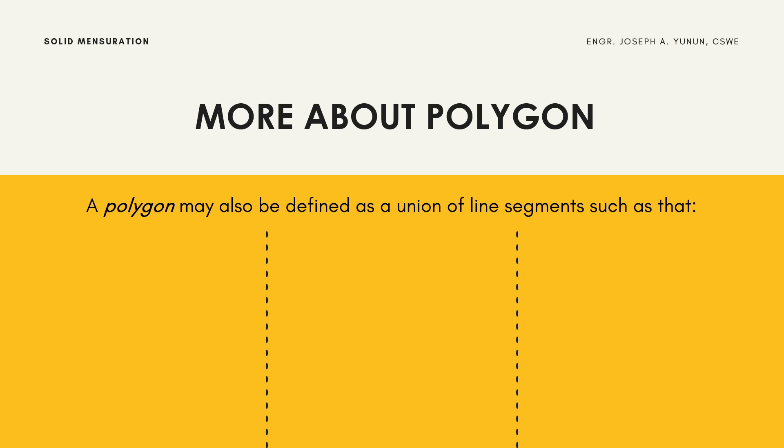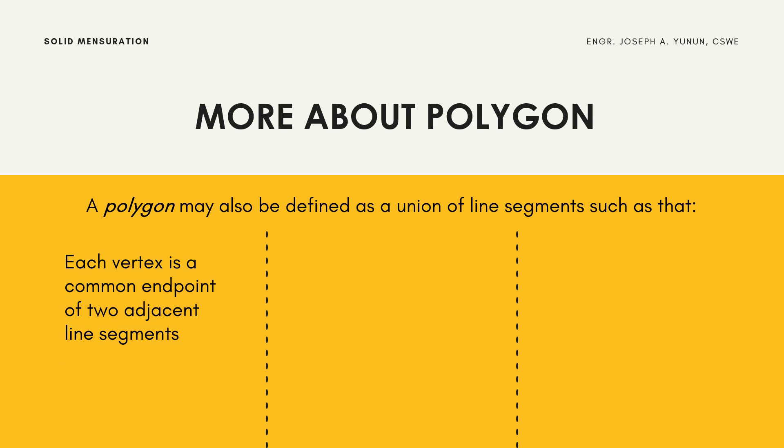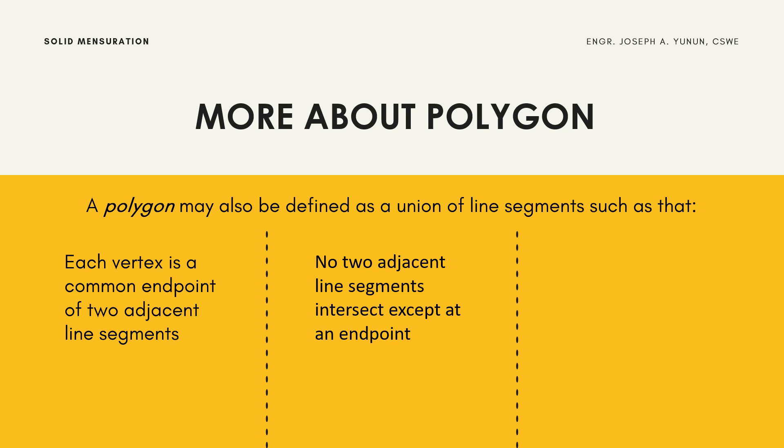A polygon may also be defined as a union of line segments such that each vertex is a common endpoint of two adjacent line segments, no two adjacent line segments intersect except at an endpoint, and no two segments with the same endpoint are collinear.